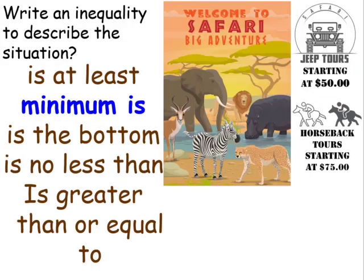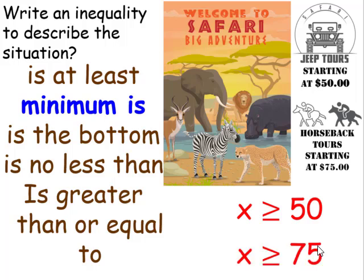Welcome to the Safari Big Adventure. Jeep tours are starting at $50 and horseback tours are starting at $75. When you see these advertisements, that's the beginning price — it's usually going to be more than $50. They're just trying to get you in, and then you have taxes, registration, insurance, and everything else, and next thing you know that $50 tour is more like a hundred and something dollars. So this is going to be greater than or equal to: the minimum amount you're going to pay is $50, but you're probably paying more. Same thing goes for the horseback riding tours — that's going to be greater than or equal to $75.